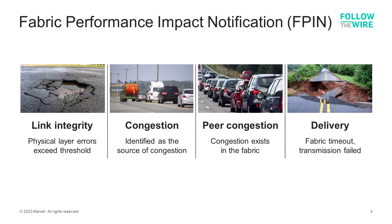The Fiber Channel industry has adopted a means for allowing HBAs and switches to communicate with each other about congestion situations. Fabric Performance Impact Notifications, or F-PINs, have been implemented in the latest Fiber Channel hardware to allow switches to notify adapters when congestion issues arise. There are four types of notifications. The first is link integrity, indicating that the physical connection is having issues — analogous to a pothole in the roadway.